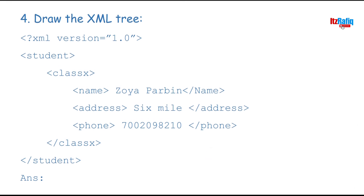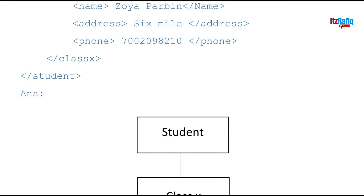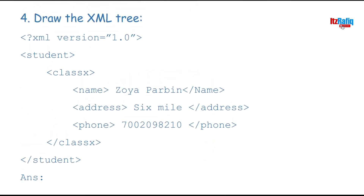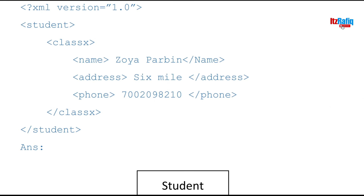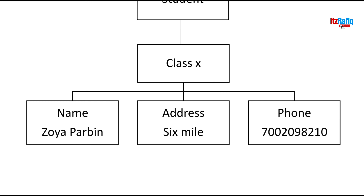The next question: draw the XML tree. To draw the XML tree, first identify the root element. In this code the root is student. Draw a box for student first. Student has one child — class 10. So draw a box for class 10 below student. Class 10 has three children: name, address, and phone — draw boxes for those at the same level below class 10, with their values shown.